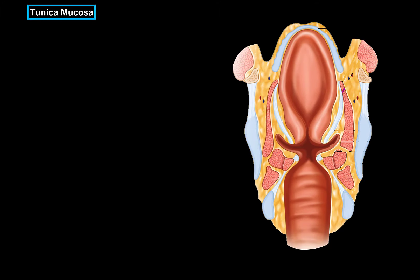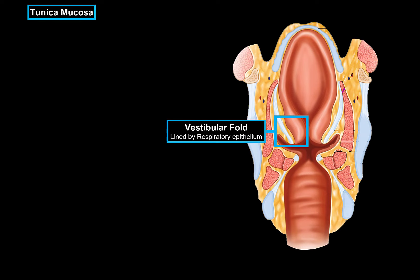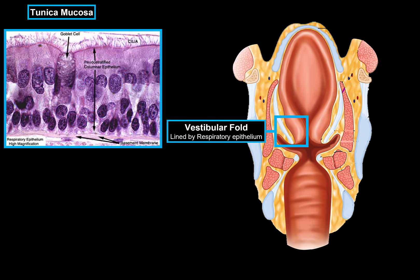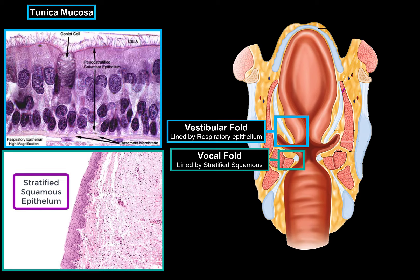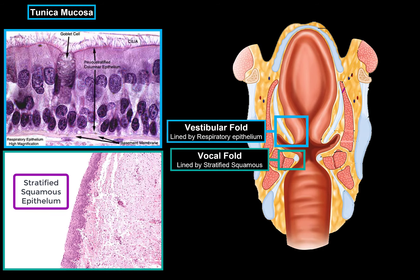The tunica mucosa is the innermost lining of the larynx. At the vestibular folds, which is the upper fold, it's lined by respiratory epithelium — epithelium specialized in filtering the air, as they contain cilia that catches small particles before they go further down into the lungs. The vocal folds are lined by stratified squamous epithelium, which is essentially logical because the vocal folds are under a lot of strain, allowing you to speak loudly and for a longer period of time without harming your vocal folds.